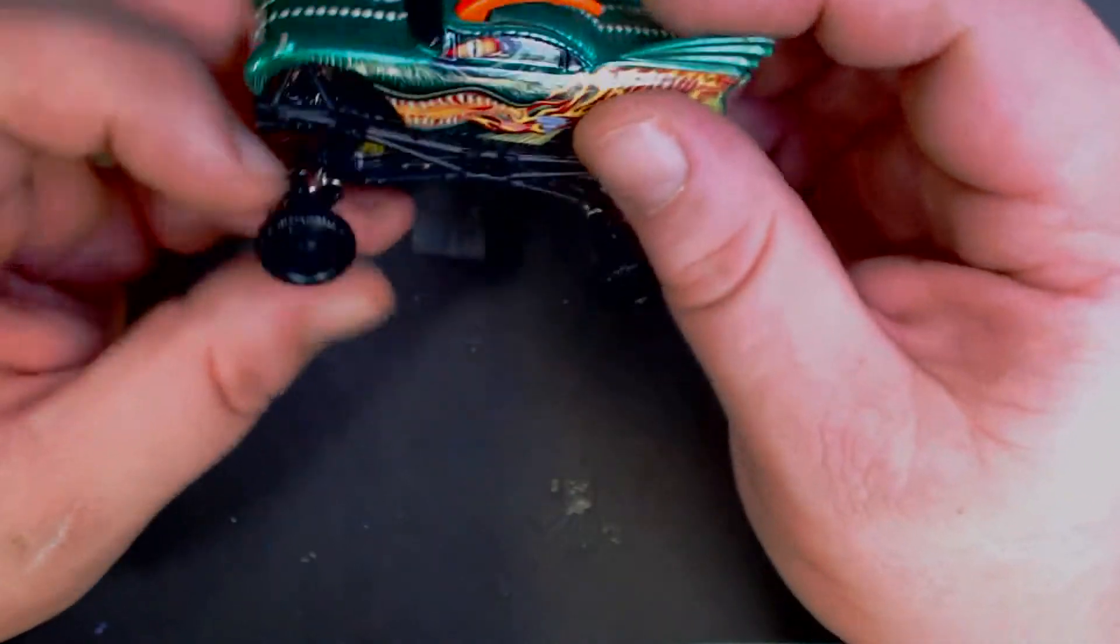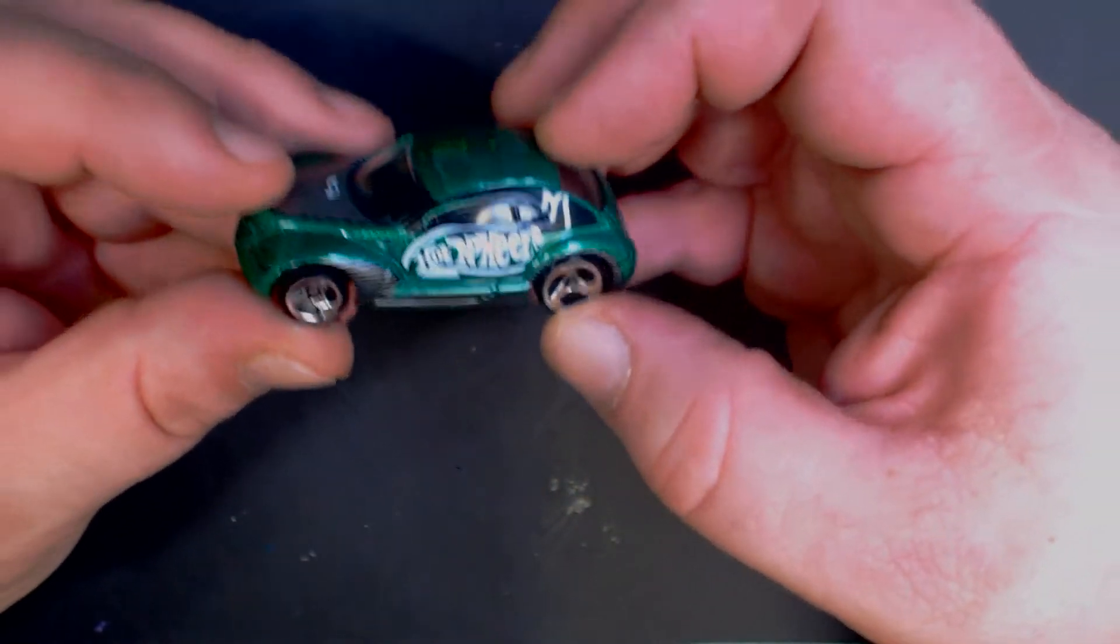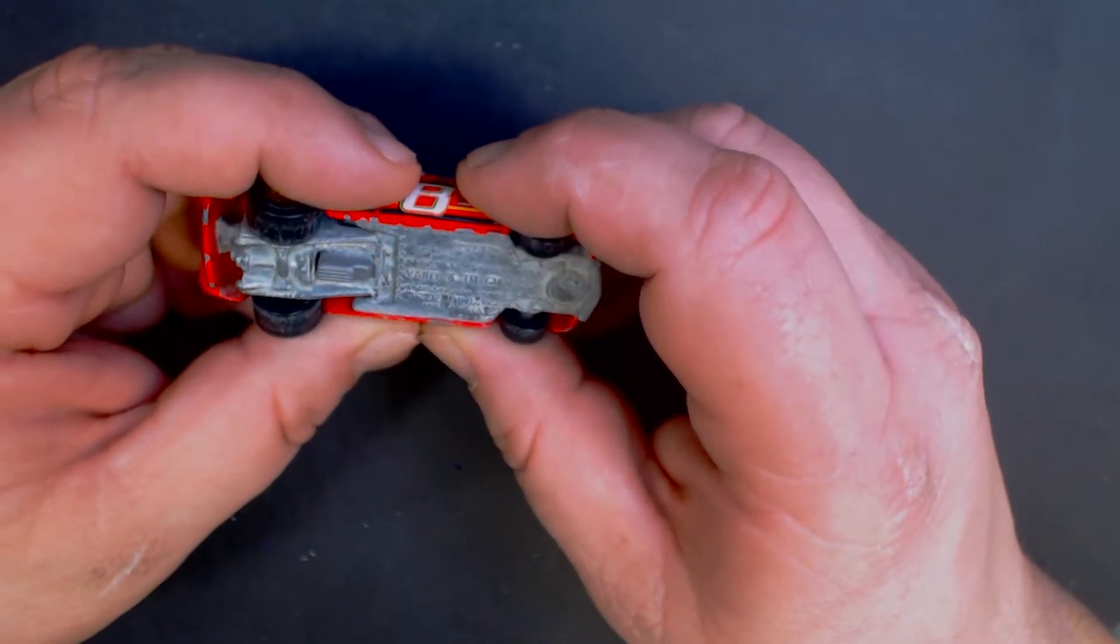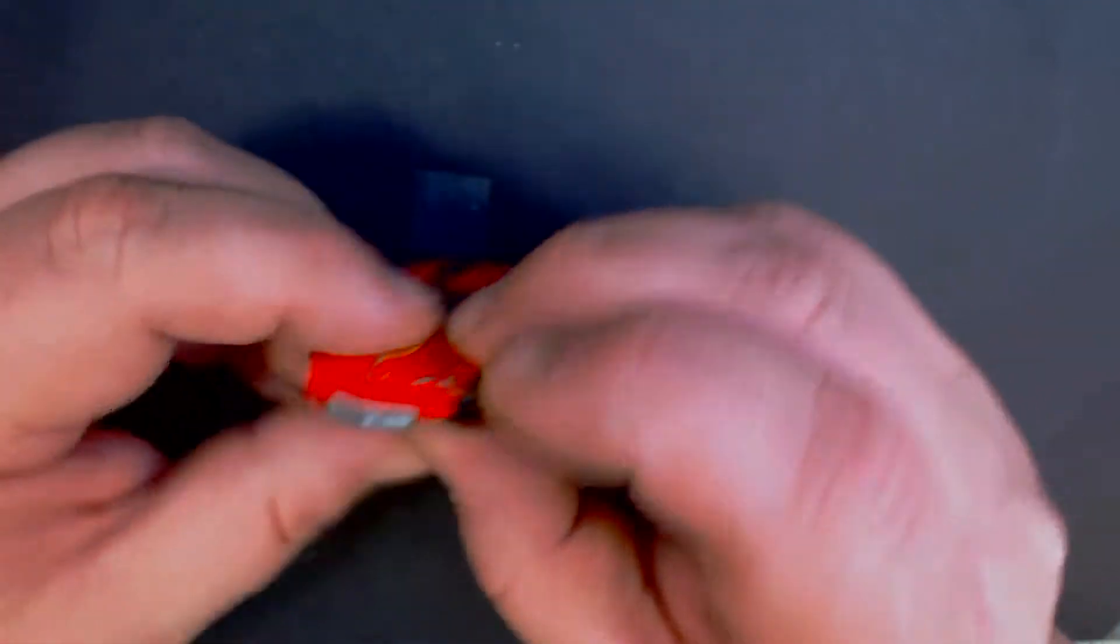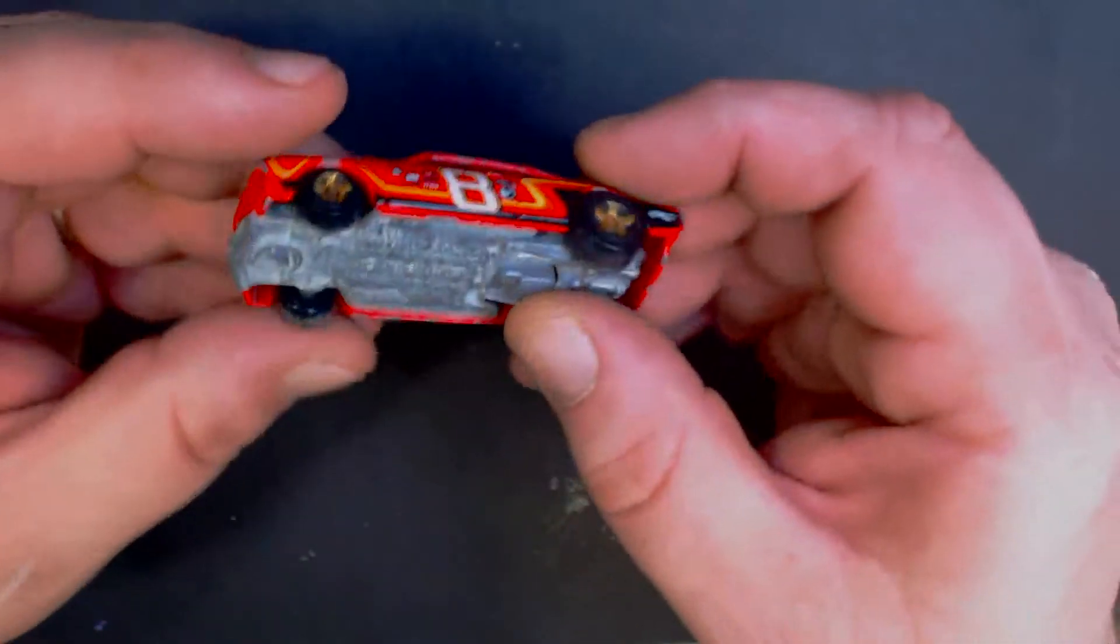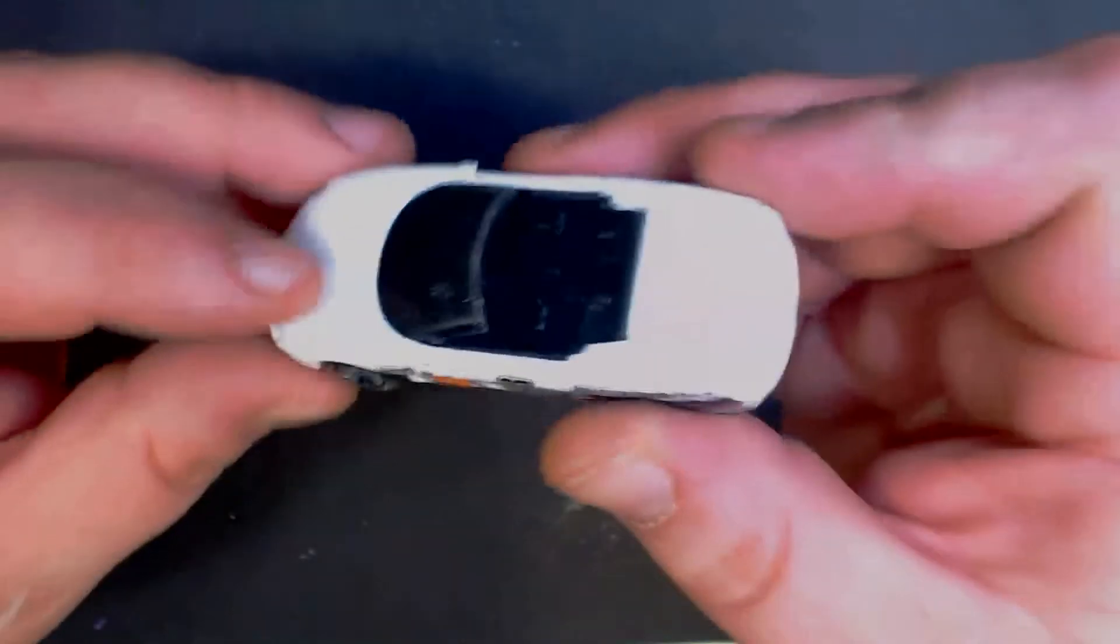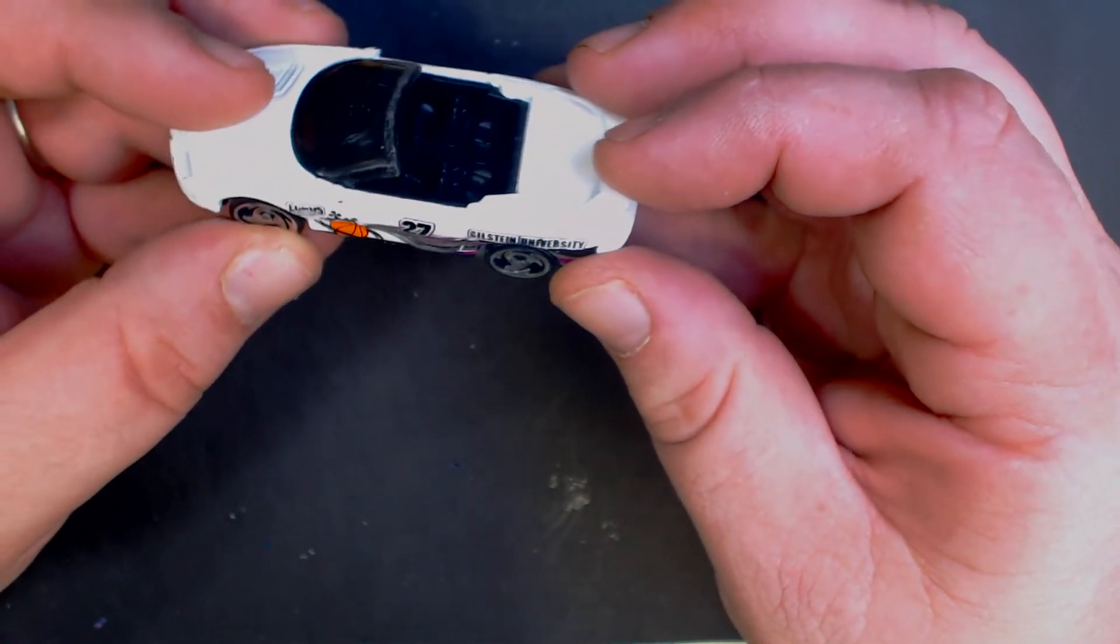And here's another one of those monster trucks missing the tires but I've got some extra tires I can put on it. There we got a Chrysler Pronto. Here we go, old metal on metal, very old. Probably not going to roll too well. We got a Camaro, Gilstein University.